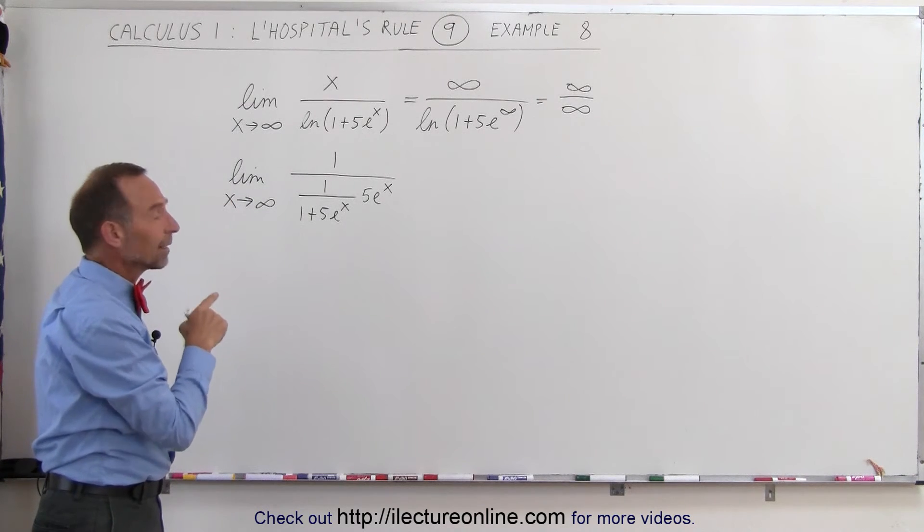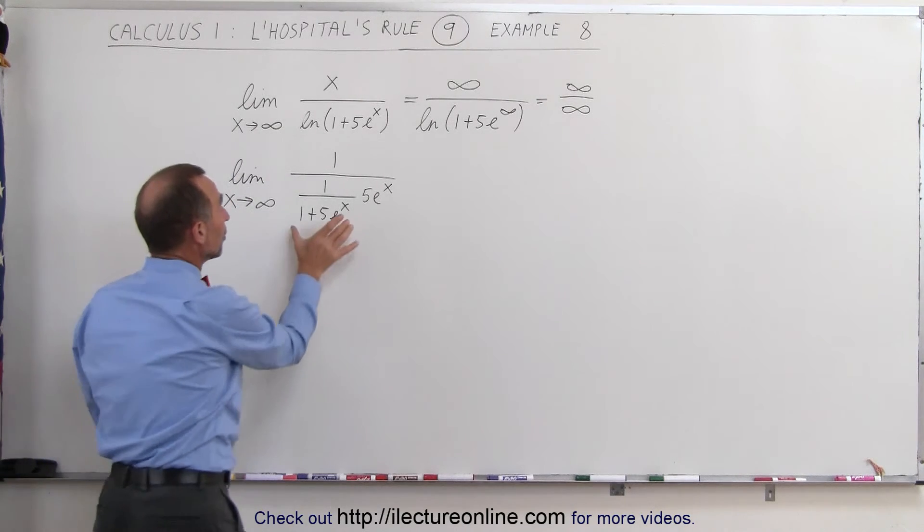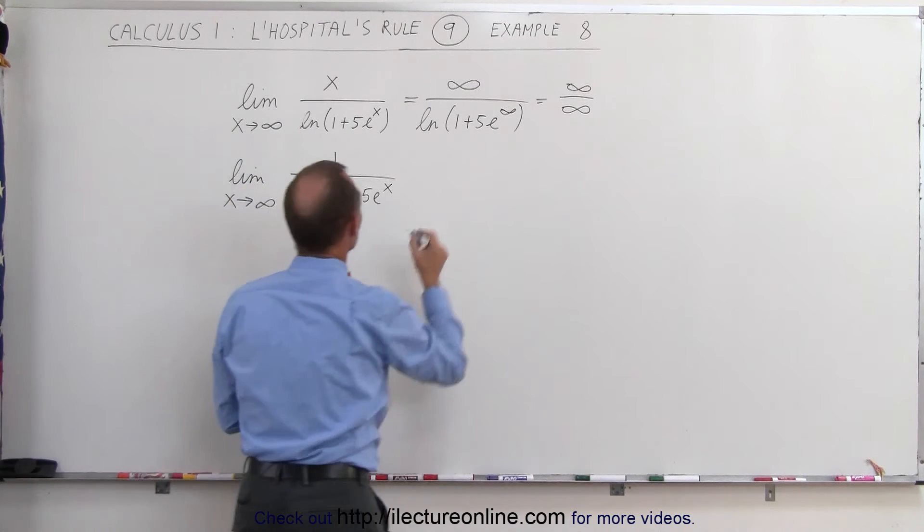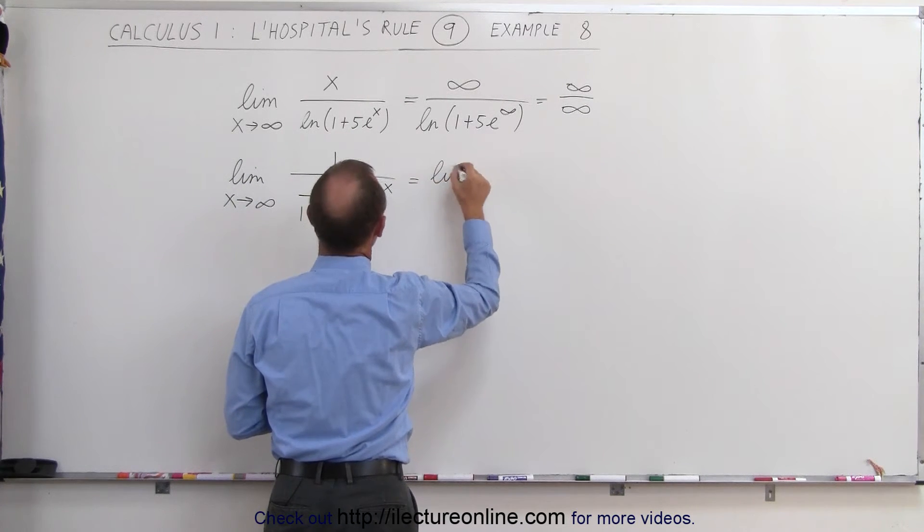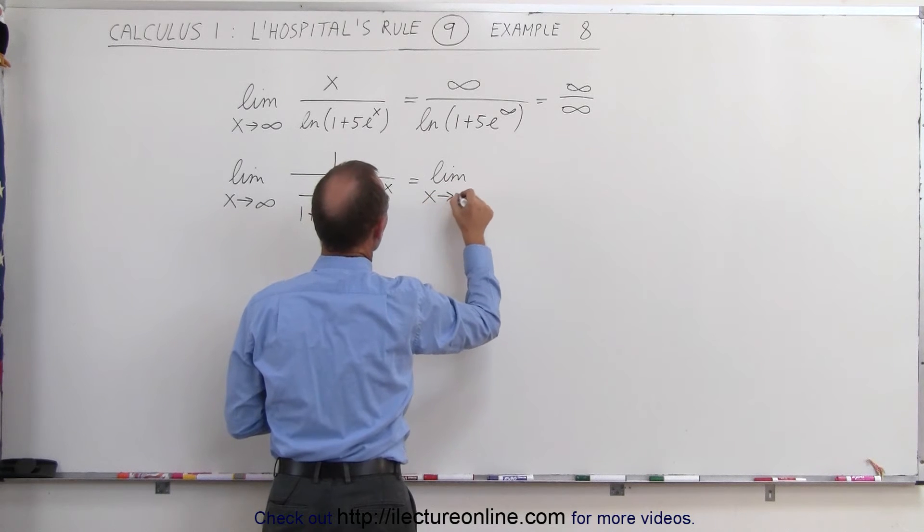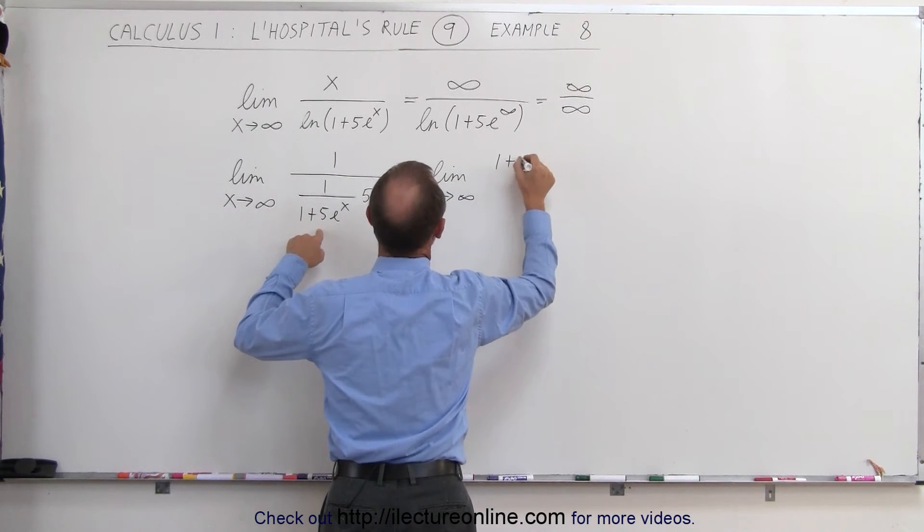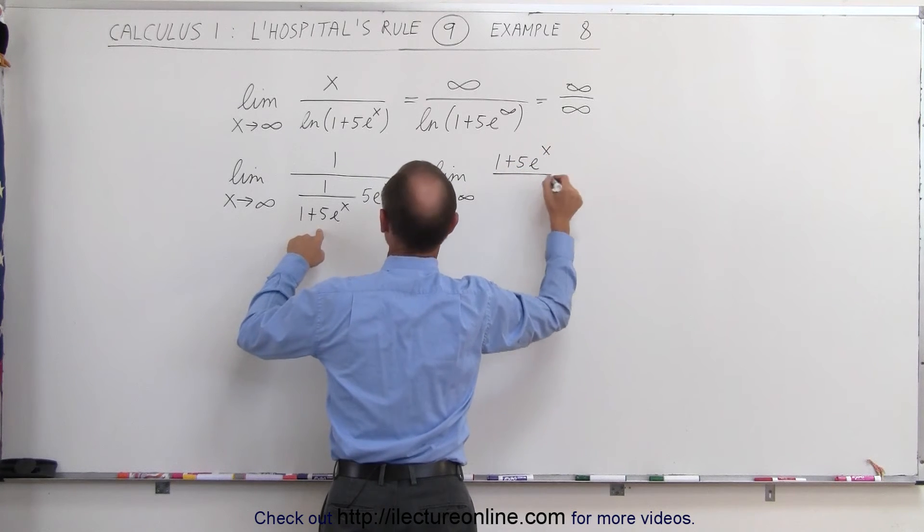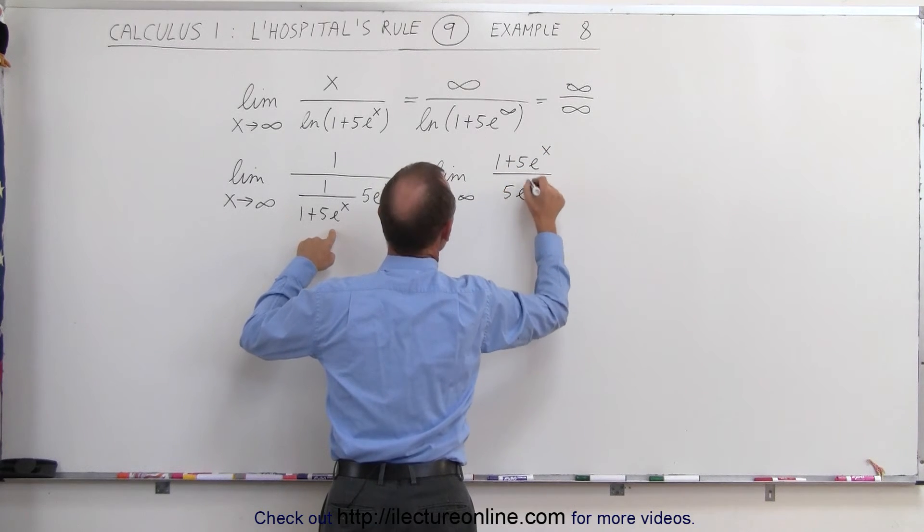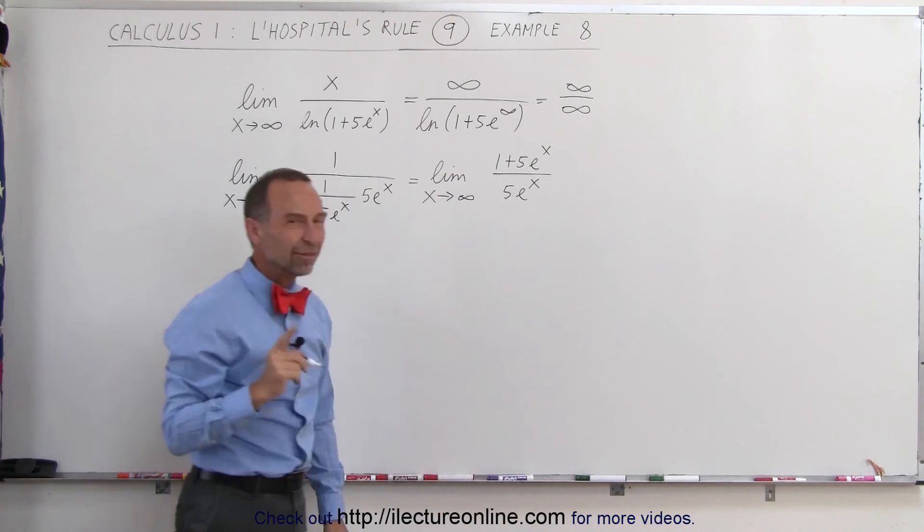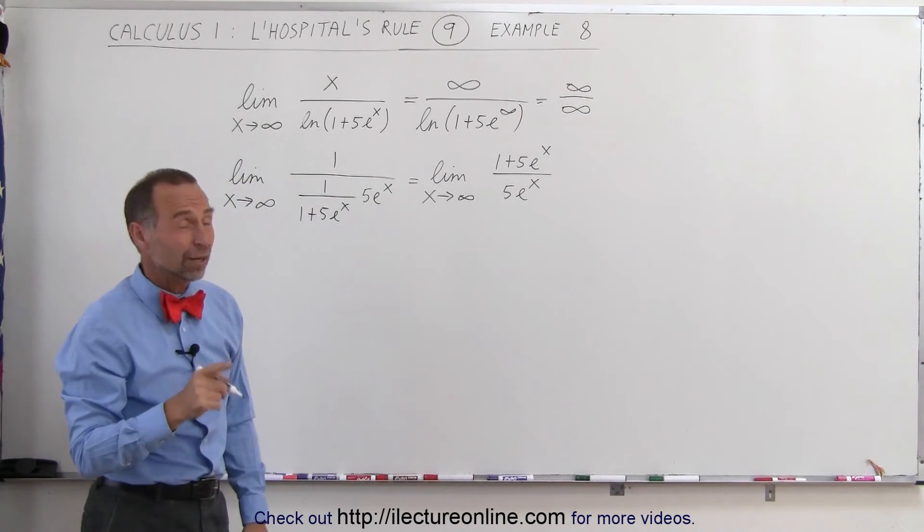Now we can probably write that a little bit better. We can move the denominator here to the denominator. This can be written as the limit as x approaches infinity of 1 plus 5e to the x divided by 5e to the x. And now let's divide the denominator into the denominator and see what we get.